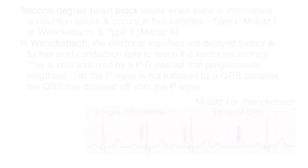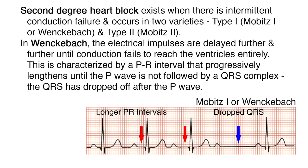Second degree heart block exists when there is intermittent conduction failure and occurs in two varieties: type 1, also called Mobitz 1 or Wenckebach, and type 2, or Mobitz 2. In Wenckebach, the electrical impulses are delayed further and further until conduction fails to reach the ventricles entirely. This is characterized by a PR interval that progressively lengthens until the P wave is not followed by a QRS complex — the QRS has dropped off after the P wave.